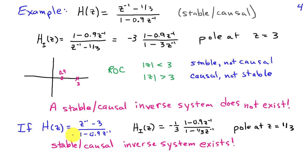If I were to change H of z a little bit, let's suppose that it was z inverse minus 3 over 1 minus 0.9 z inverse. Then my inverse system, instead of having a pole at z equals 3, has a pole at z equals 1 third, and clearly now I could find an inverse system that is both stable and causal.